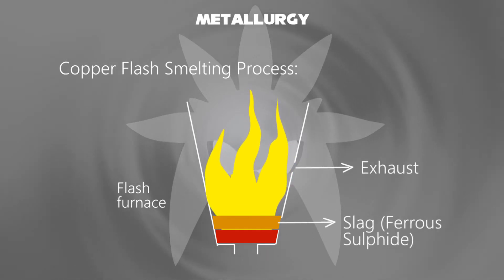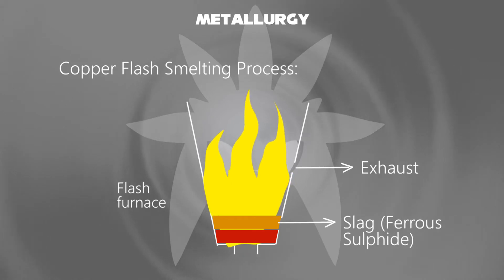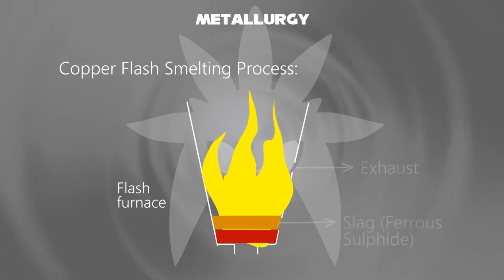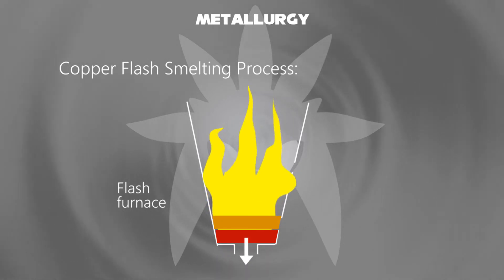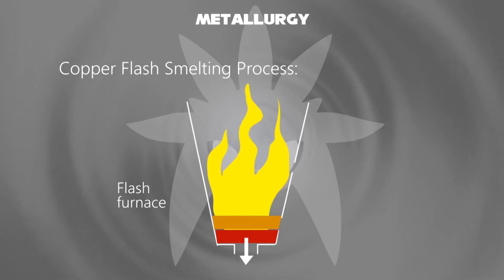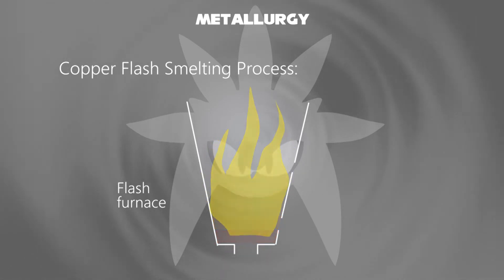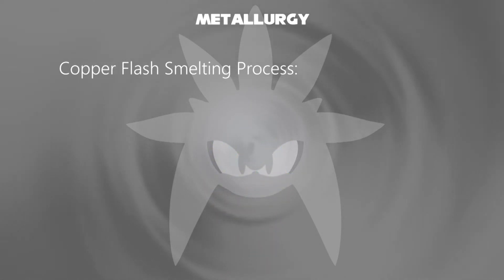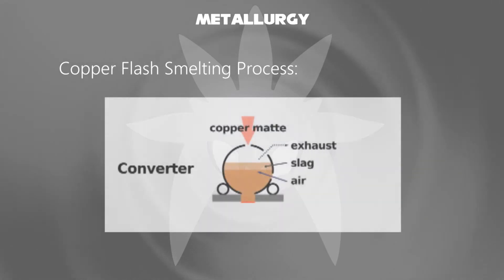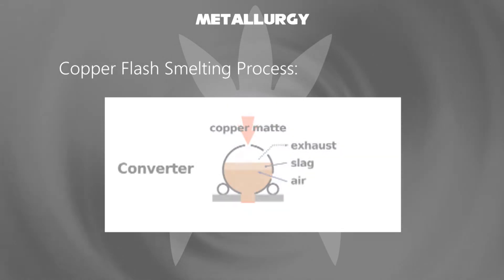This type of impurity — ferrous sulfide — forms into a slag. The molten slag floating on copper sulfide can be tapped off through the outlet. Secondly, in this converter, a copper mat sinks down to the bottom and waste gases can be removed at the first stage.